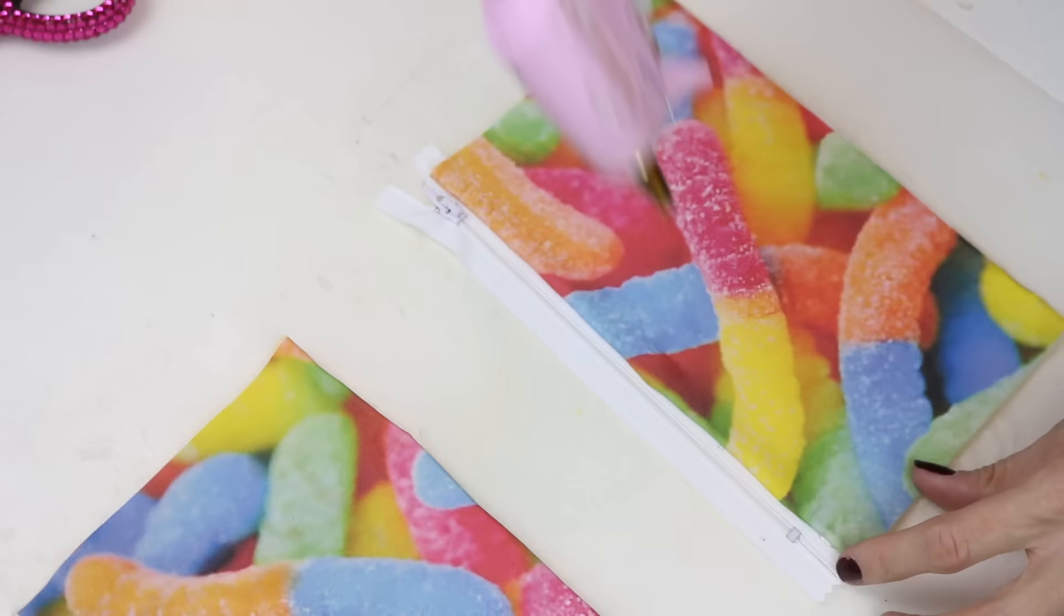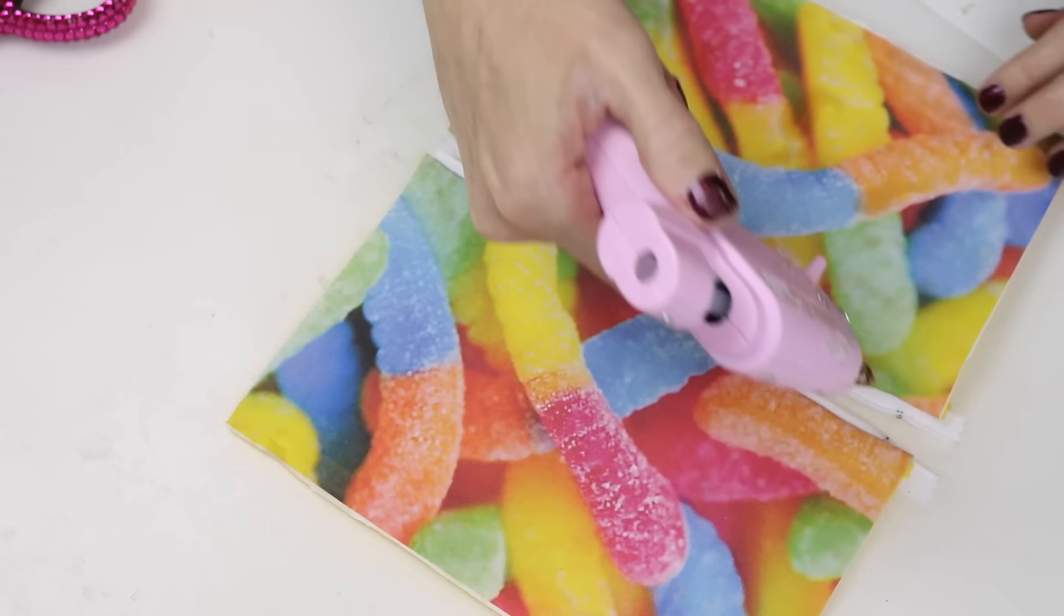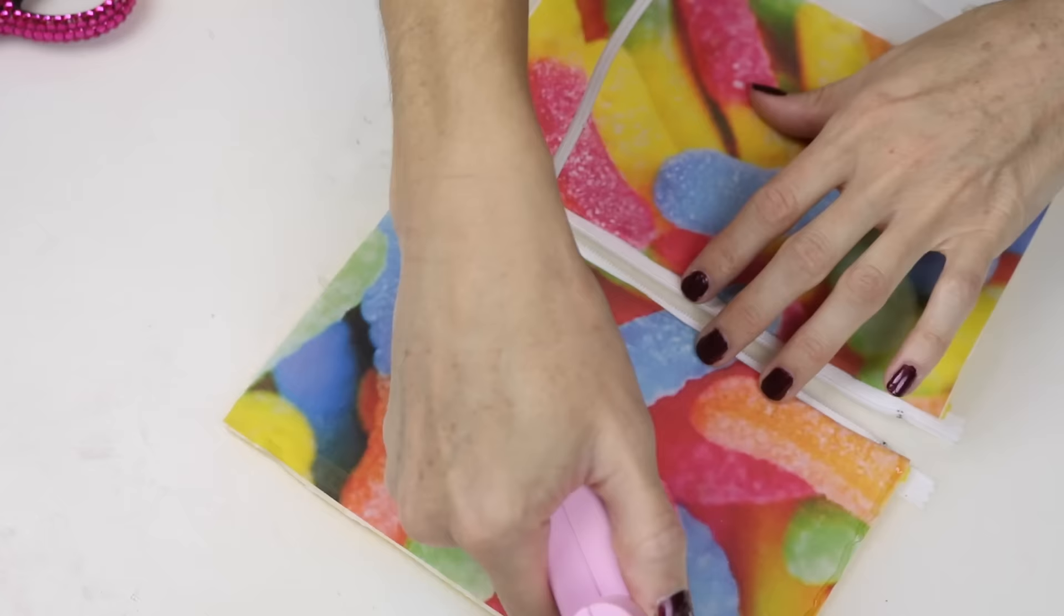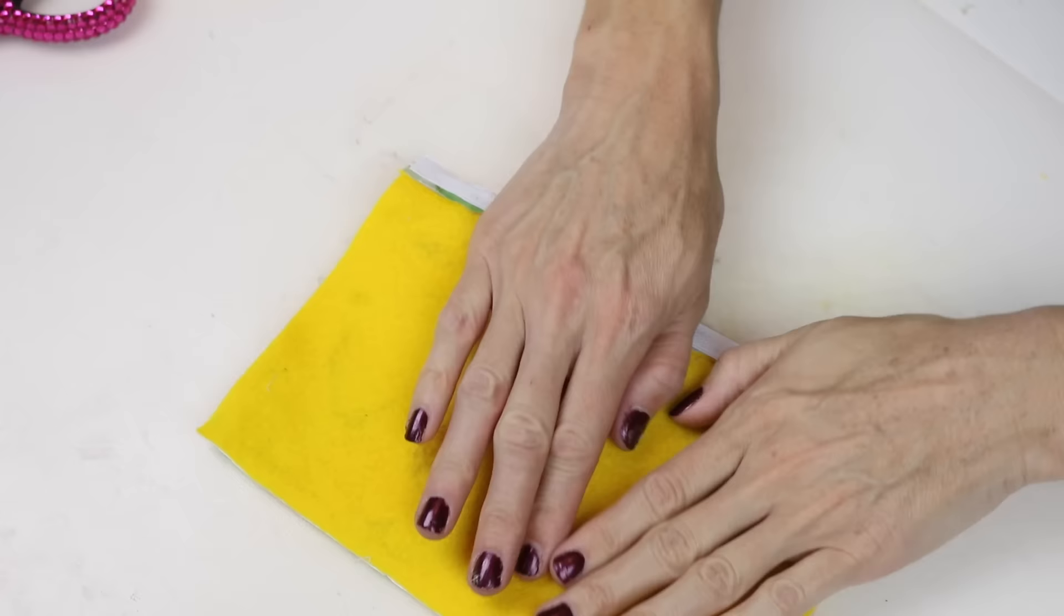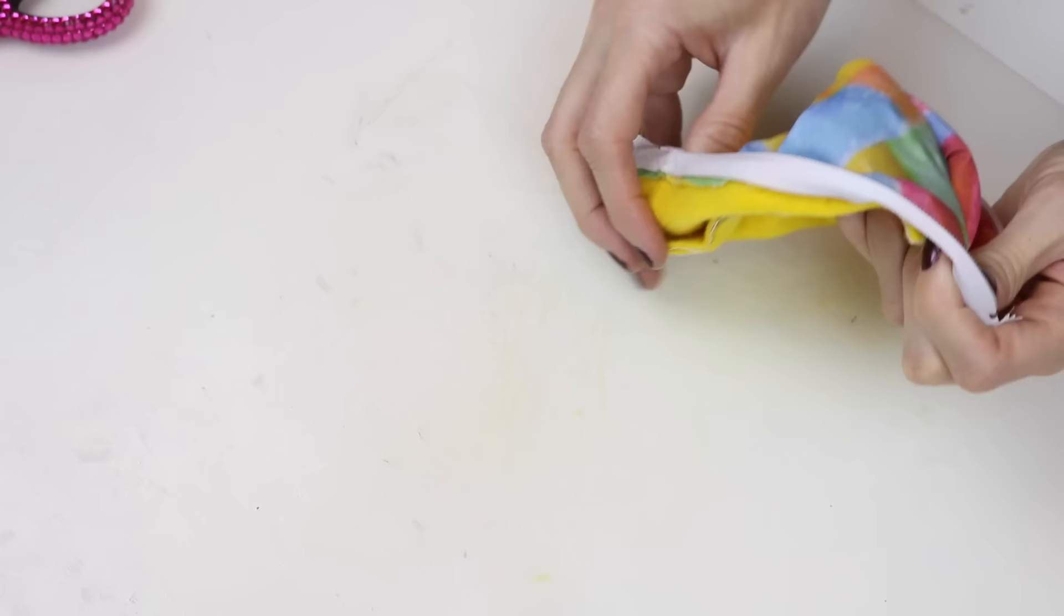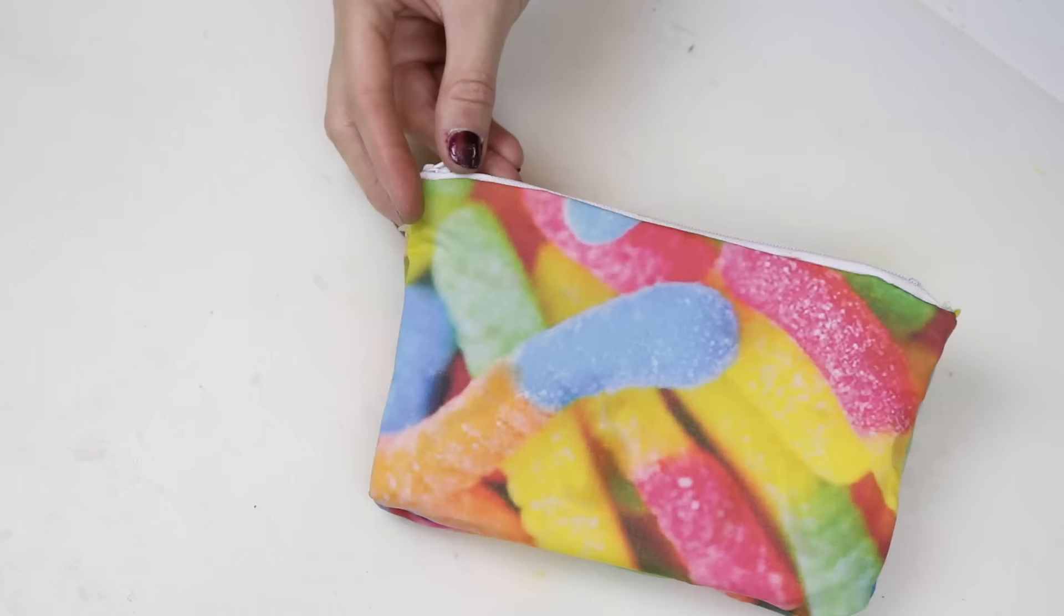Once that is secured to the zipper, go ahead and unzip the zipper. Then glue around the edges. Fold the two halves together. Let the glue dry. Then turn your bag inside out. And there is your gummy worm bag.